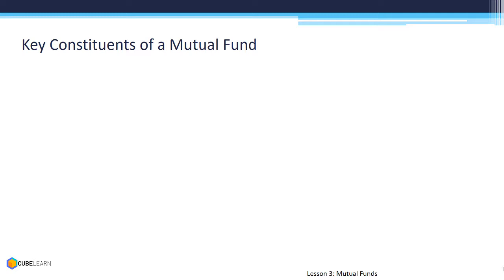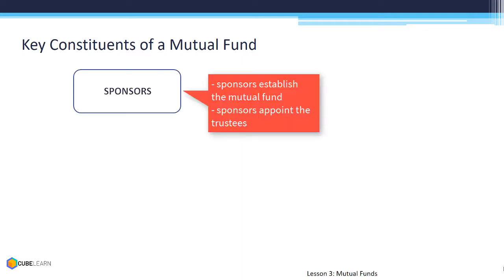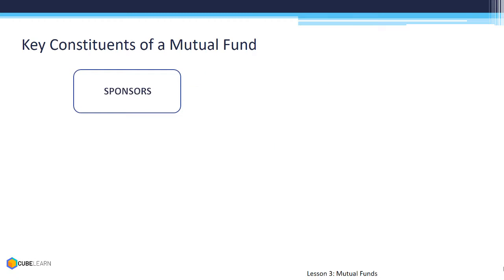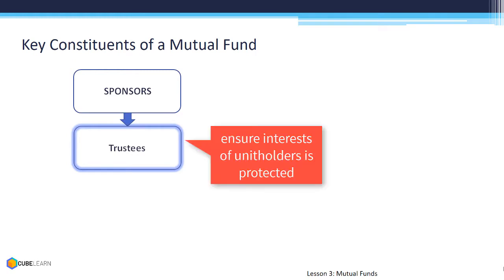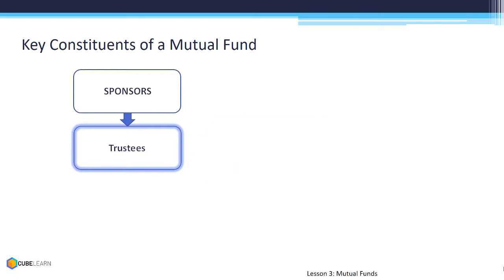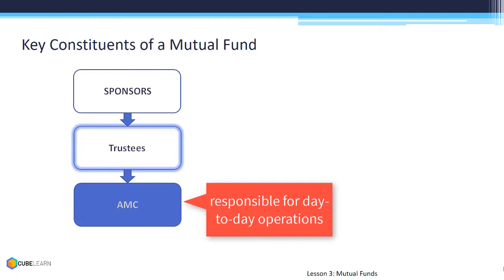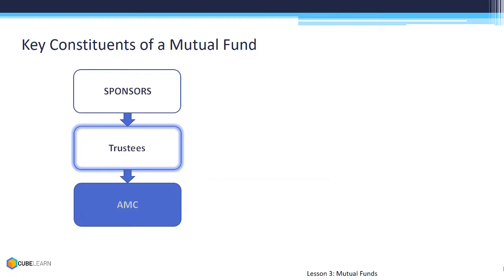Mutual funds have a three-tiered structure of sponsors, trustees, and AMC. Sponsors are the main body that establish the mutual fund and appoint the trustees. The main role of the trustee is to ensure that the interest of investors and unit holders is protected. AMC, or Asset Management Company, is the investment manager of the trustees, responsible for day-to-day operations like launch and marketing of schemes, collecting funds, and investing according to scheme objectives.